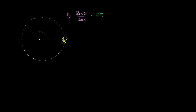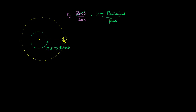If you go all the way around a circle, you have gone two pi radians, which means you've gone two pi radii — whatever the radius of the circle is. That's actually where the definition of the radian comes from. So if you're going five revolutions per second, and there are two pi radians per revolution, you can do a little dimensional analysis. These cancel out, and you get five times two pi, which gives us 10 pi radians per second.